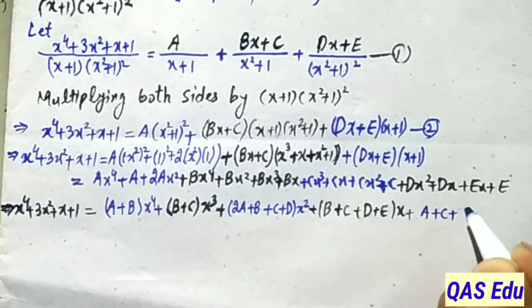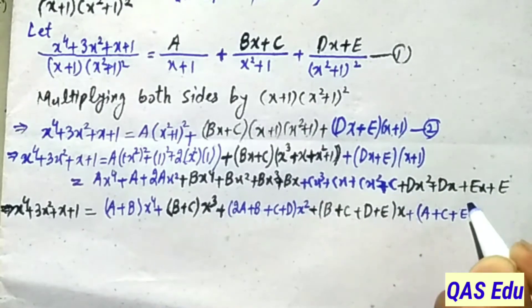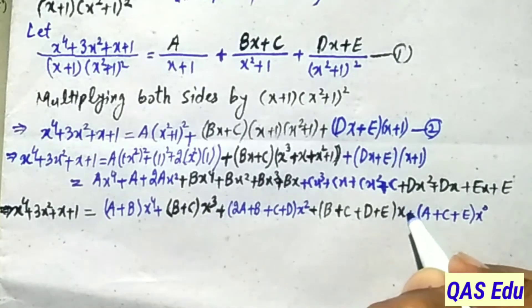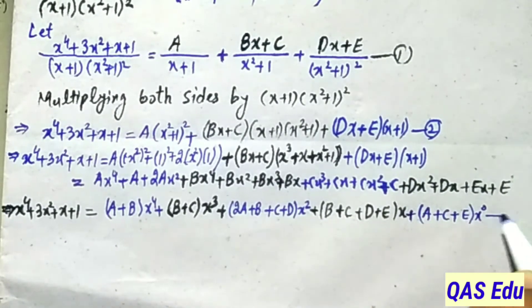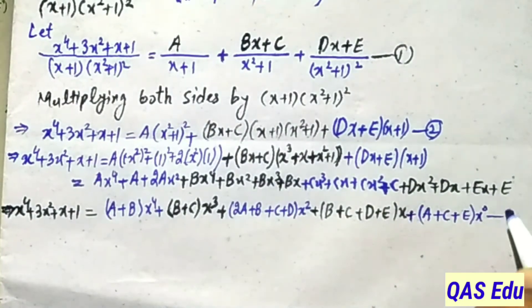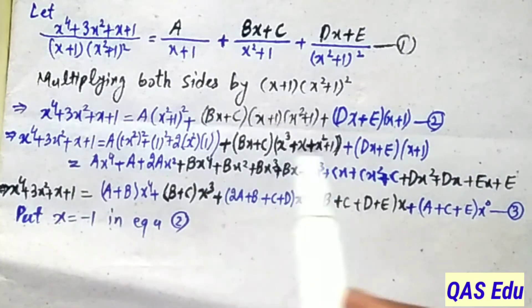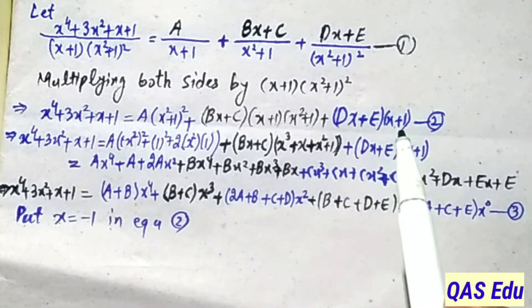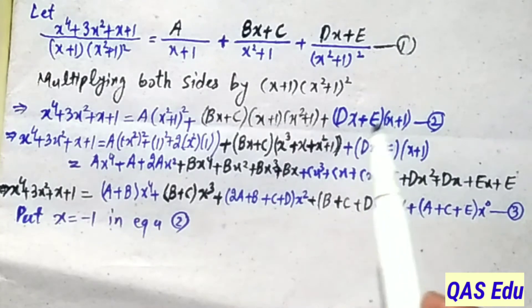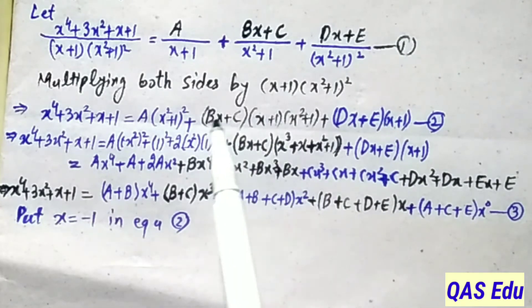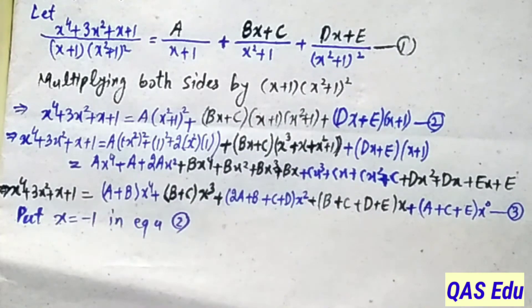Collecting all constant terms: A + C + E. Since one times one equals one and multiplying by x⁰ = 1 makes no change, equation number 3 is now formed. To find a constant quickly we put x = -1 in equation number 2: (x + 1) becomes 0, eliminating the B, C, D, E terms and leaving only A.